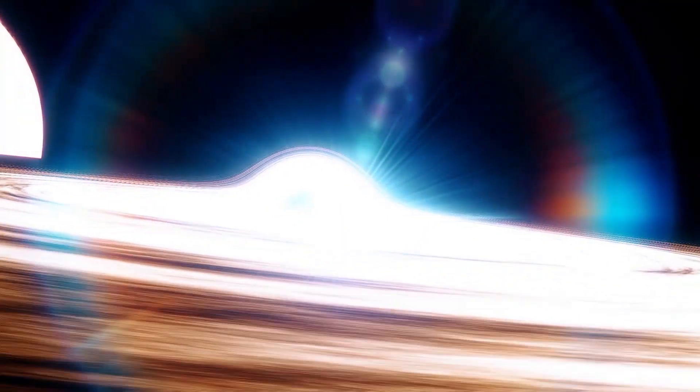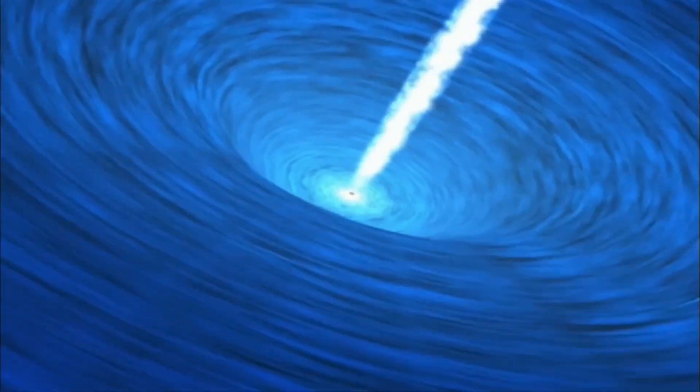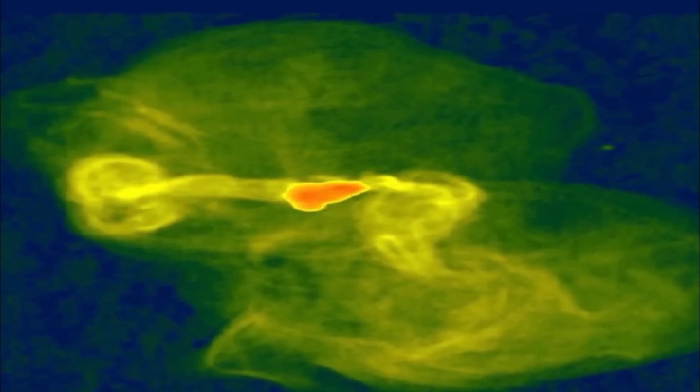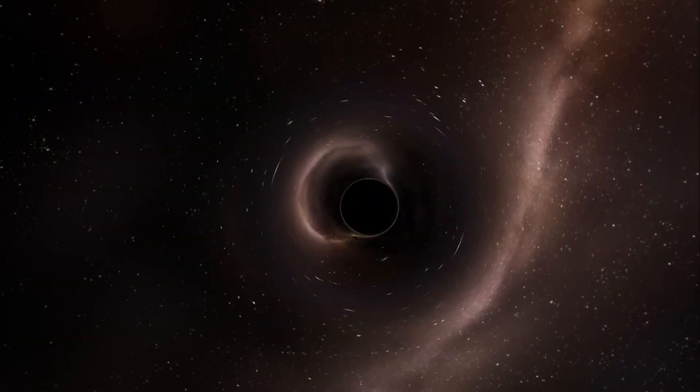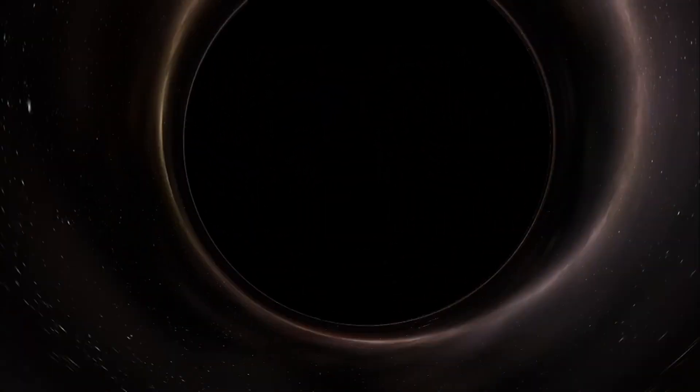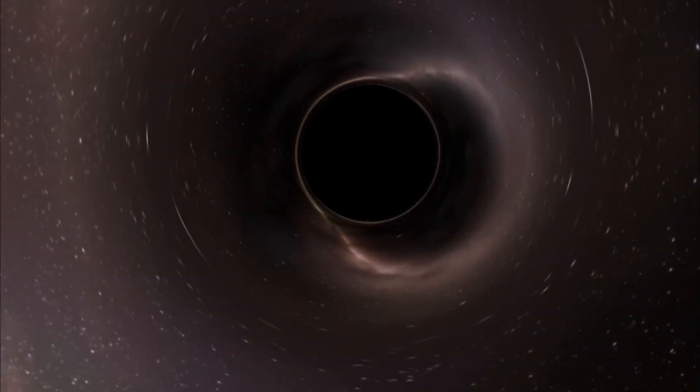The distinguishing feature of a white hole is that it only allows matter and energy to flow outward. Nothing can cross its event horizon from the outside to the inside, which distinguishes it primarily from black holes. Now, in theoretical discussions of white holes, intriguing questions have arisen about their temporal properties. For example, it has been speculated that the flow of time inside a white hole could be reversed, raising scenarios that challenge our conventional understanding of causality.